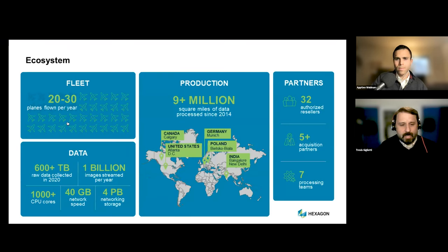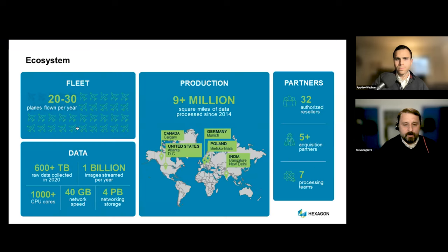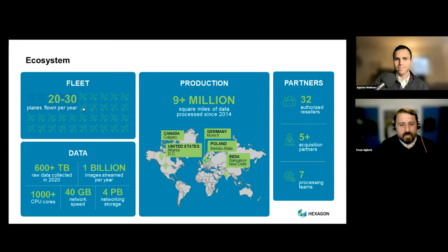Mature workflows produce the highest level of photogrammetric and radiometric quality, providing single-season coverage and highly consistent data that's good for base mapping, visualization, and even the most demanding machine learning and AI applications. The important thing to take away: when you sign up for the content program, you get immediate access to the most current imagery for your state over a selected term — and if they fly your state within that term, you get that updated dataset as well. Hexagon and their partners acquire data at the state level in a cadence closely aligned with the NAIP program, with access to 20 aircraft and a data processing center distributed throughout the world, providing 24 hours of uptime in processing.